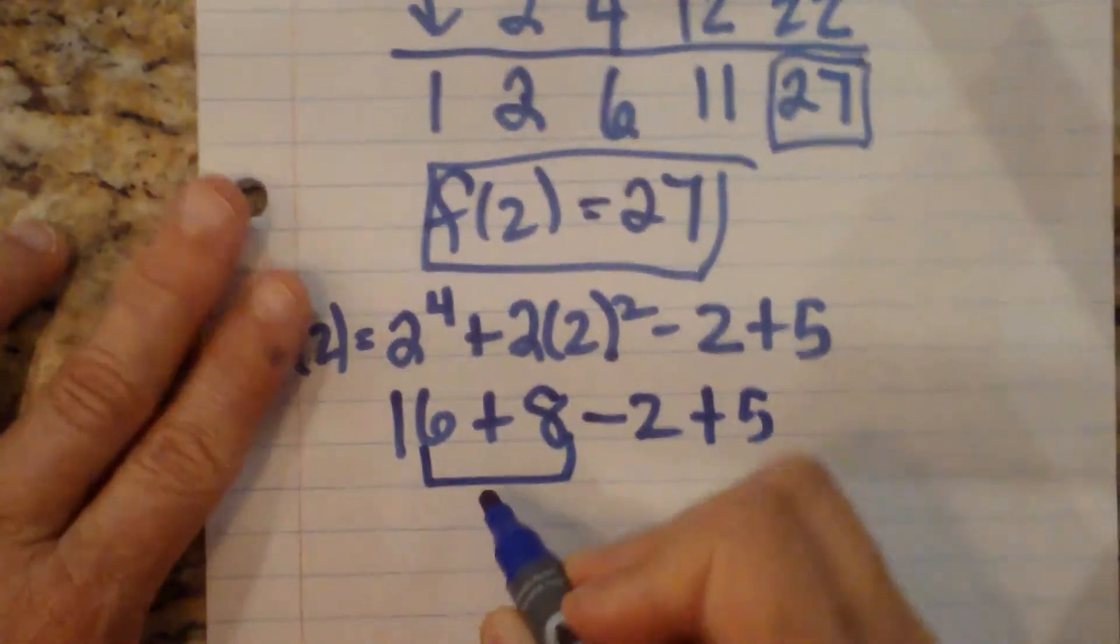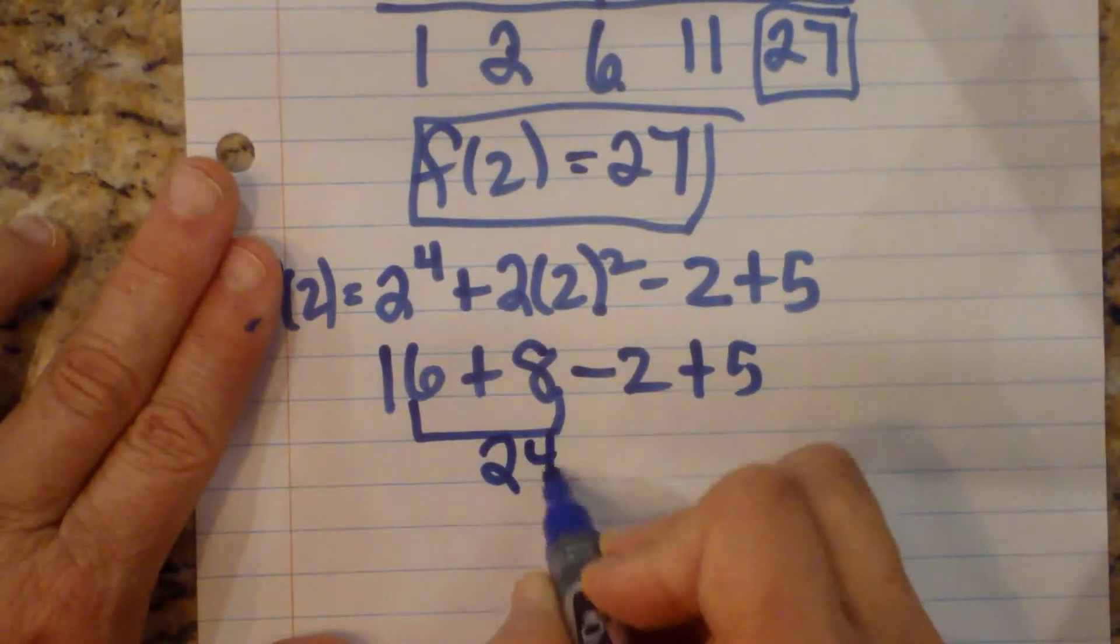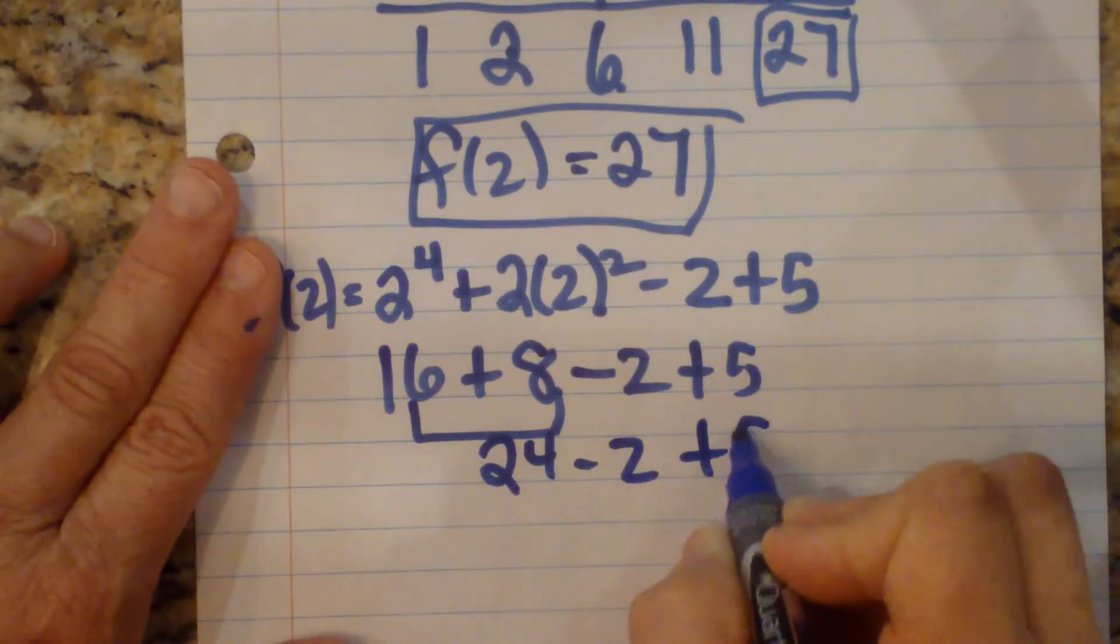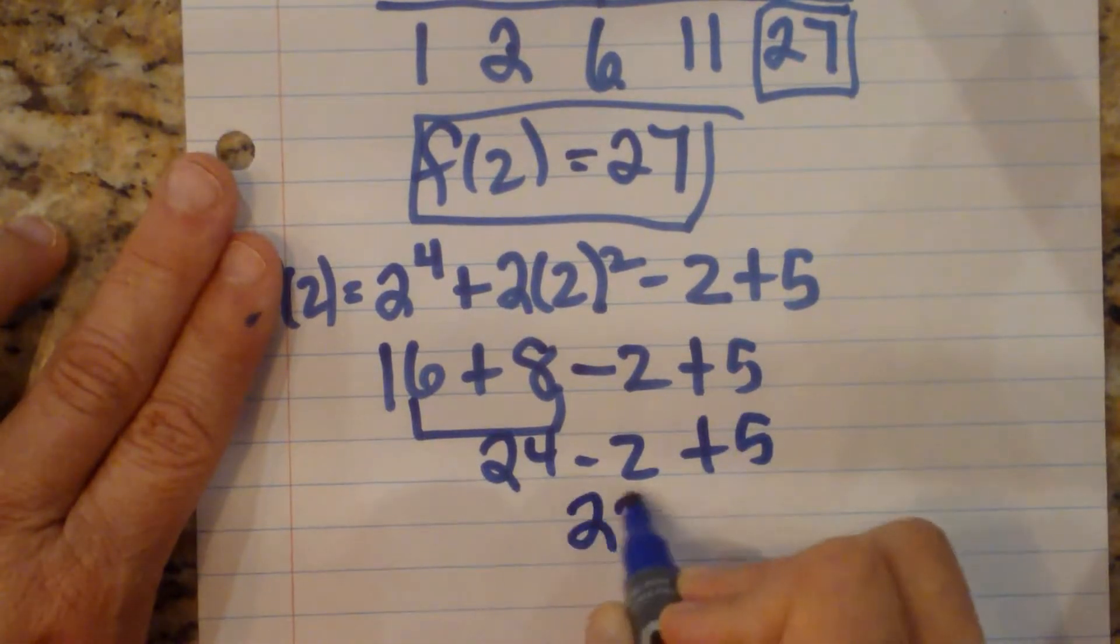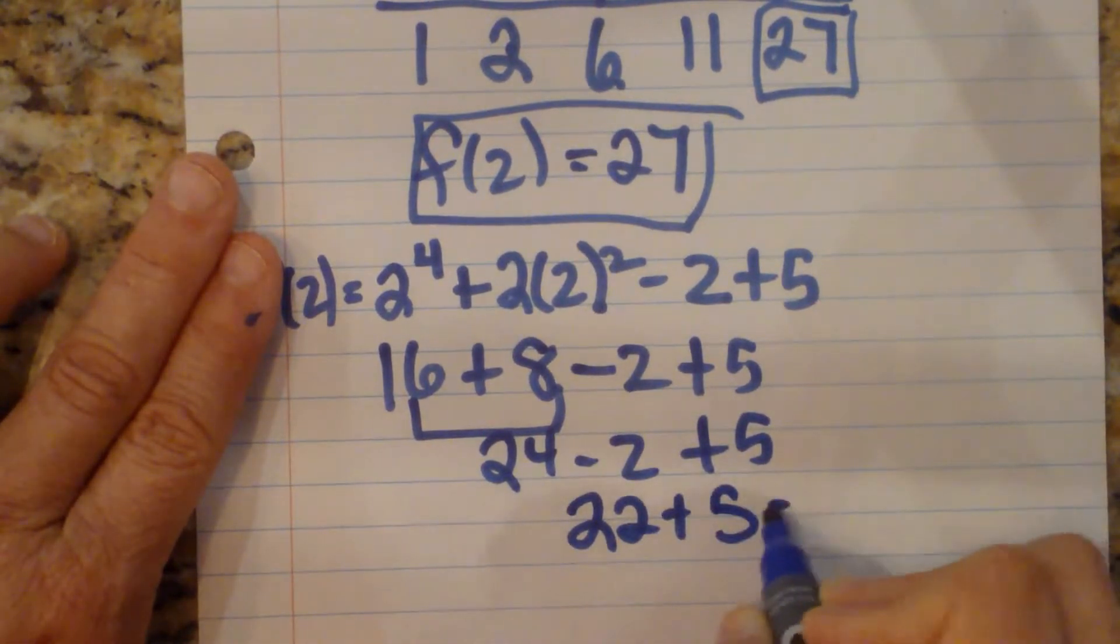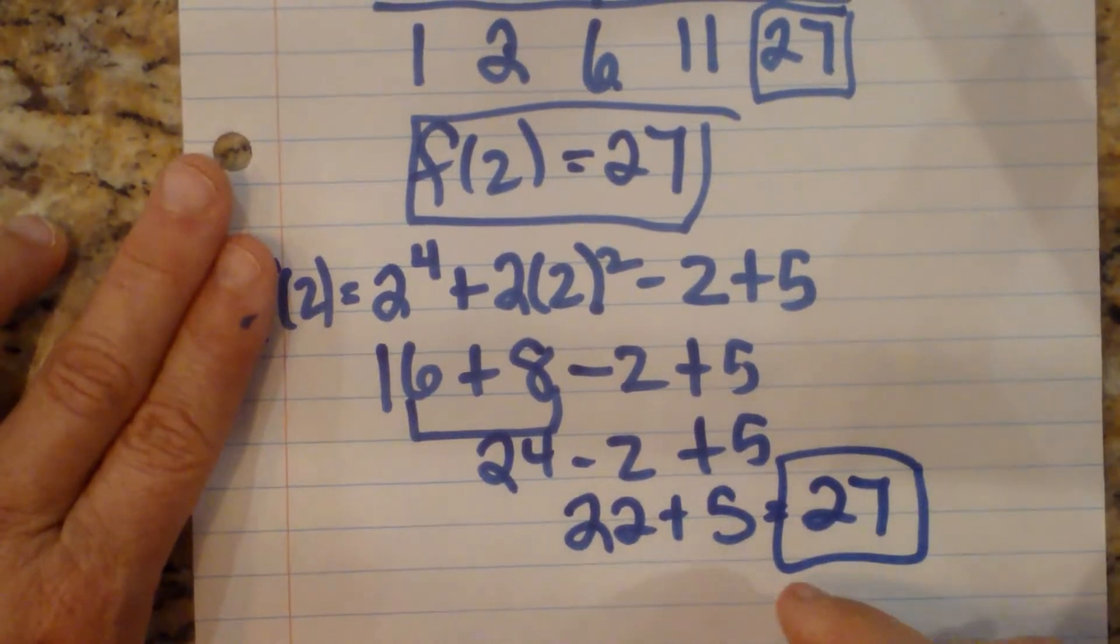That's going to give us 22 plus 5, which equals 27. And look, we got 27.